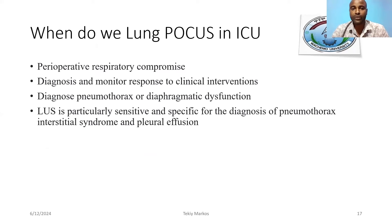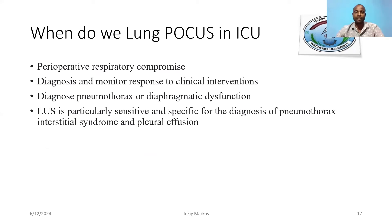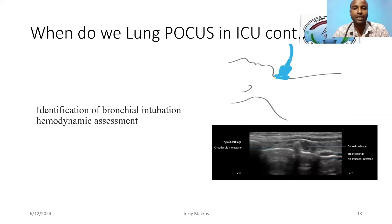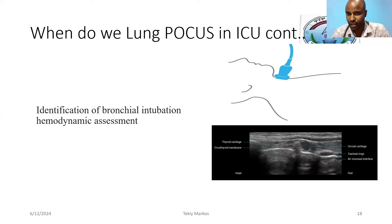In ICU, lung ultrasound assessment of the parasternal and intercostal muscles can predict successful weaning risk. Therapeutic respiratory guidance and monitoring response to clinical interventions is also an area where we use ultrasound. The diagnosis of pneumothorax, diaphragmatic dysfunction, and interstitial syndromes like pneumonia, ARDS, pulmonary edema, and pleural effusions is where lung ultrasound is particularly sensitive and specific.